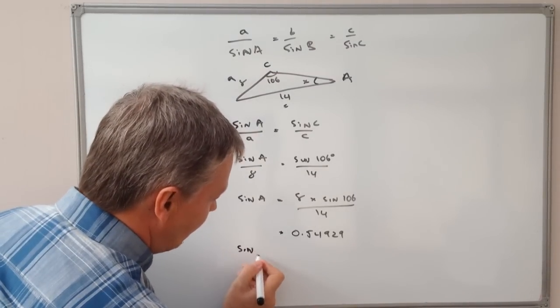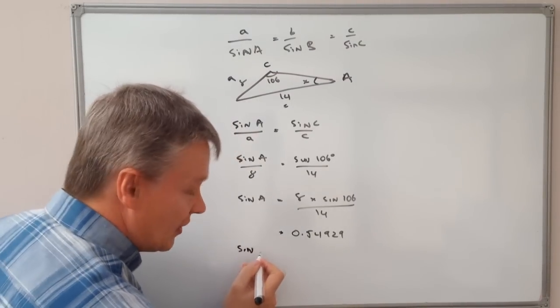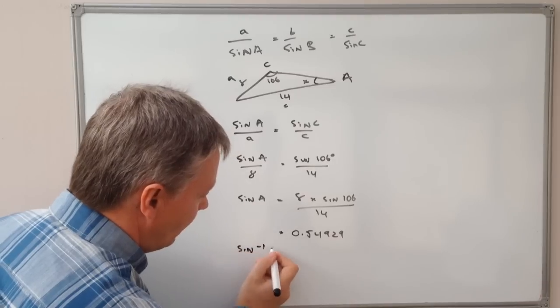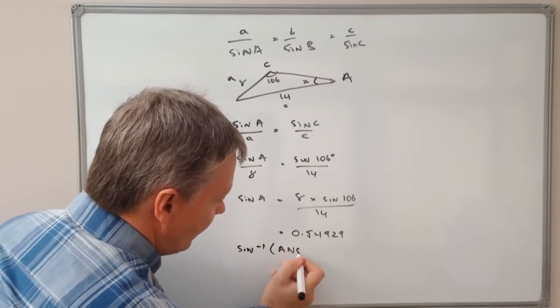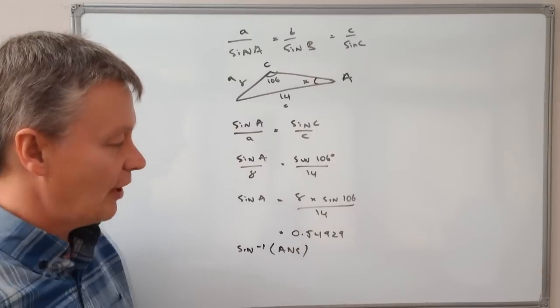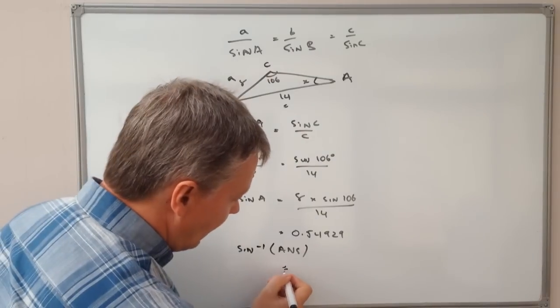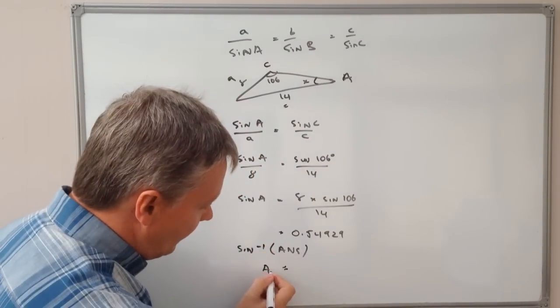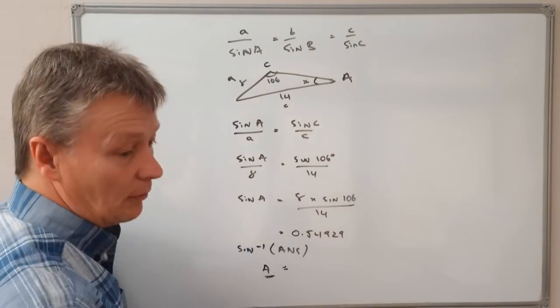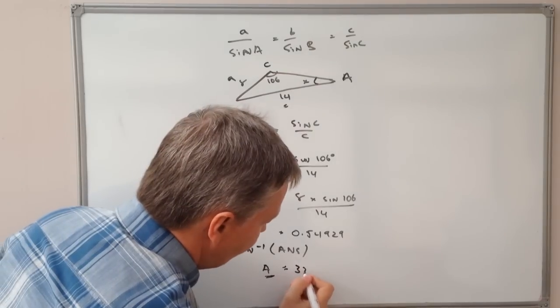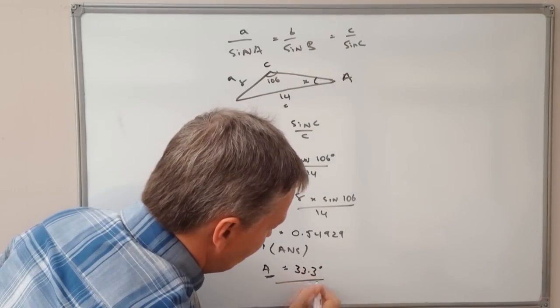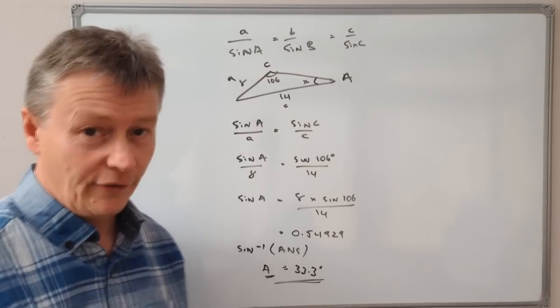So I'm going to key in my calculator the value of sine to the minus one brackets answer, or if you like, 0.54929. When I calculate that in, it gives me a value of A, which in this particular case is what I'm looking for, of 33.3 degrees to one significant figure.